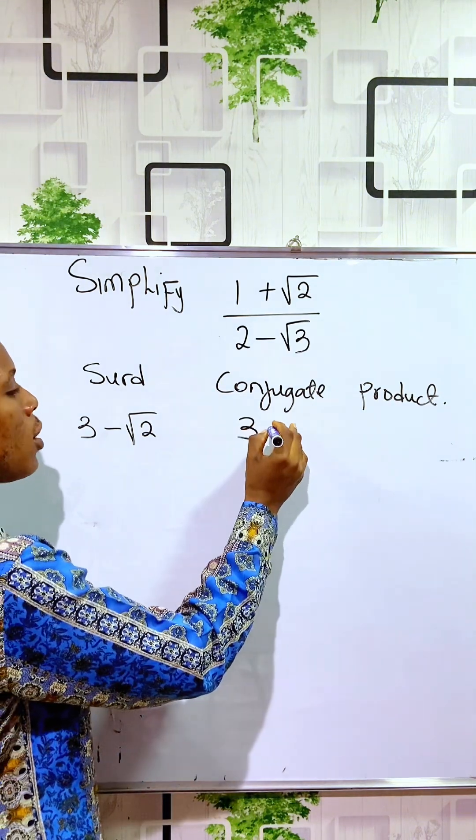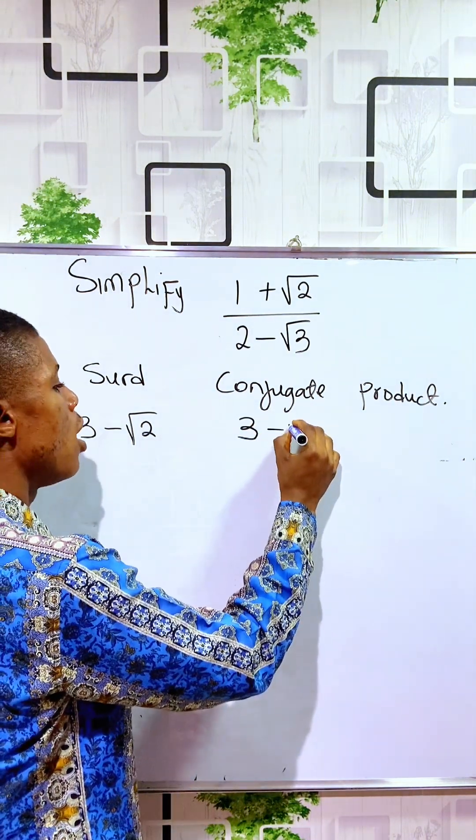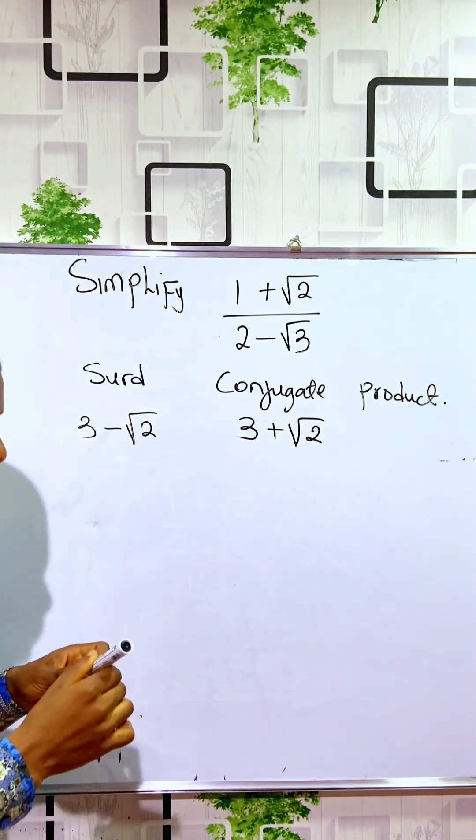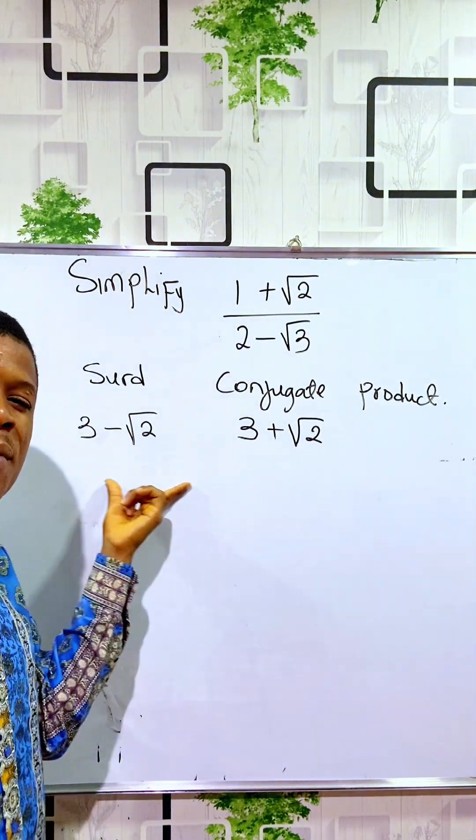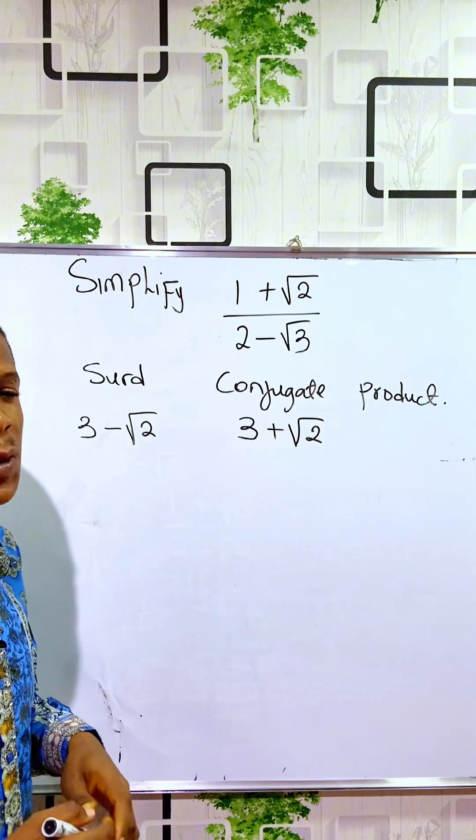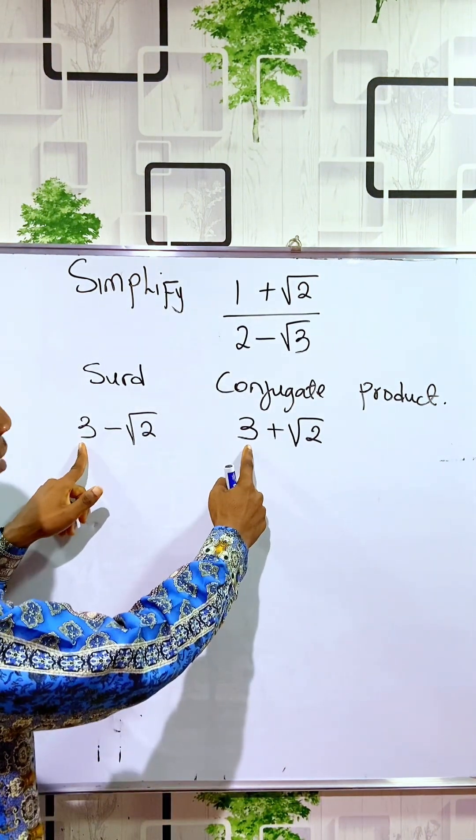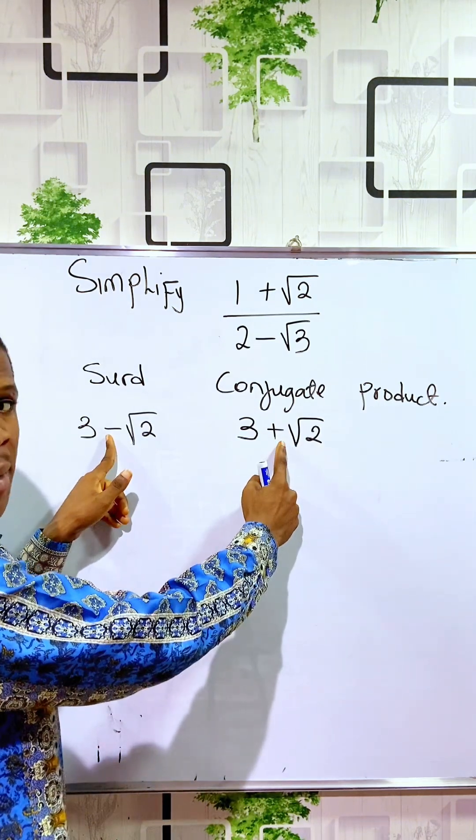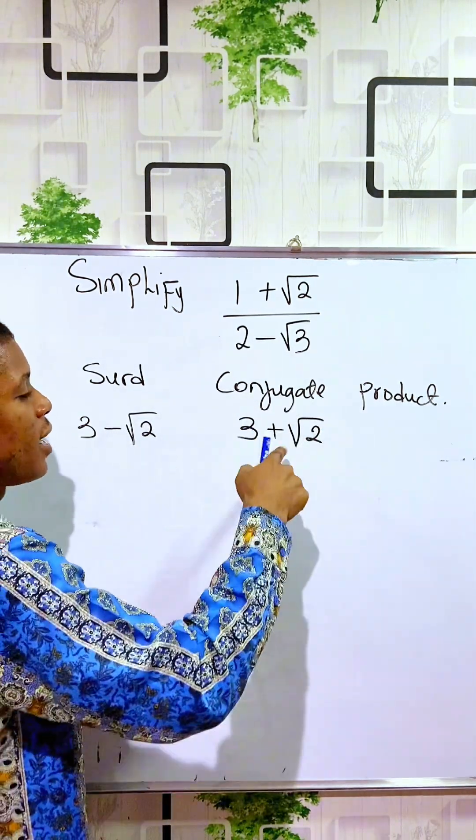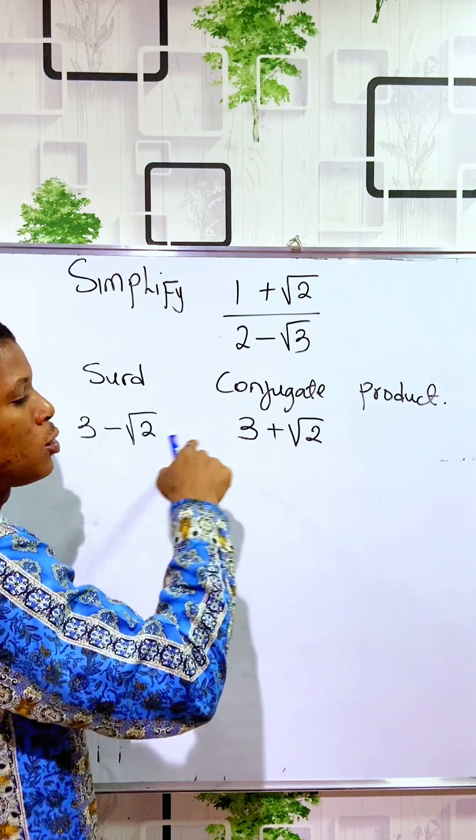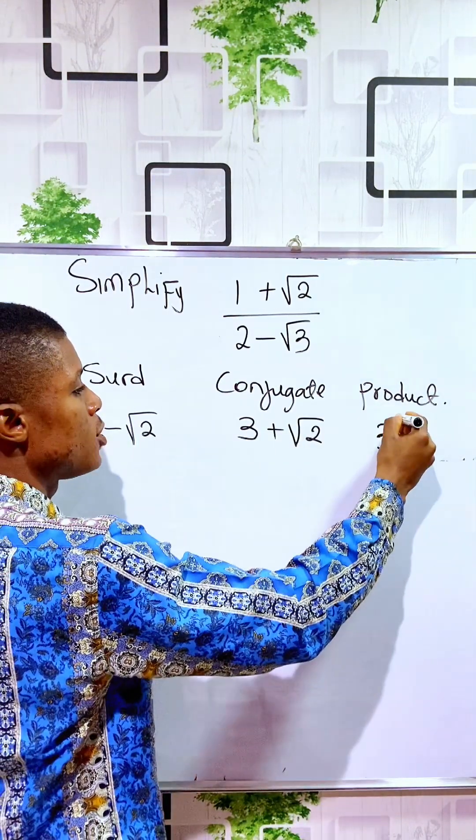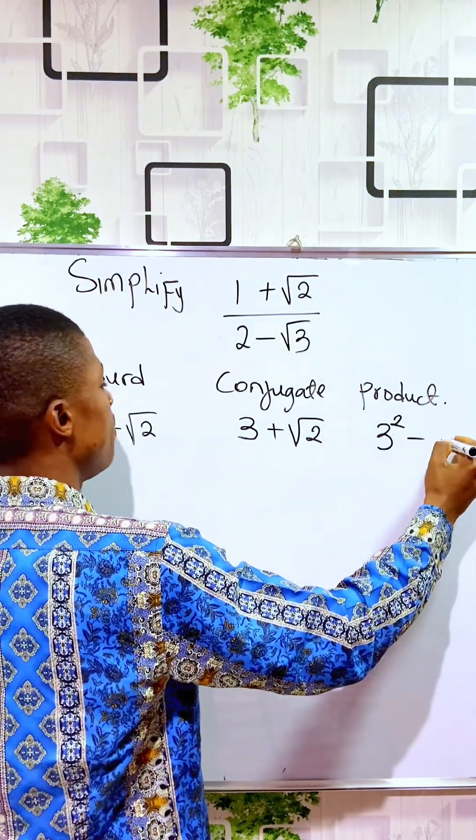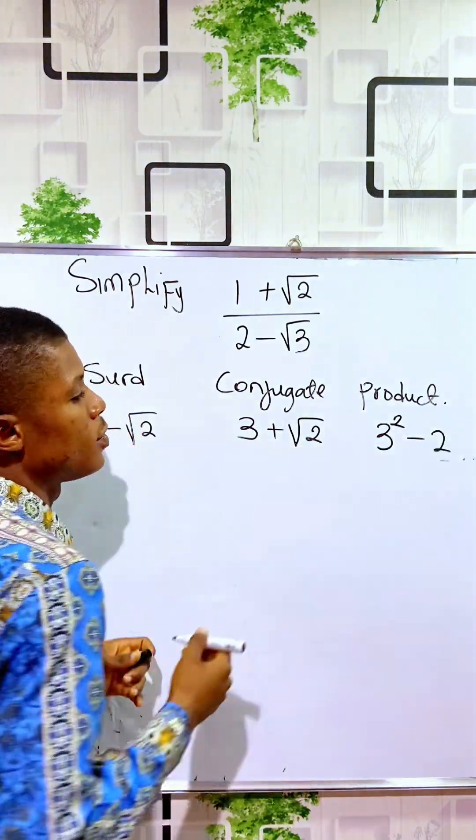So you can see that here I have minus, the conjugate surd becomes 3 + √2. Then when you multiply them together, it brings about difference between two squares, because the first terms are the same, the last terms are the same. We have a plus and we have a minus, so the product of the two surds will now be the first term squared minus the number in the square root, which is 2.